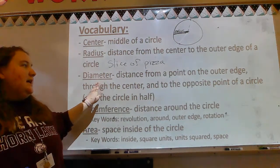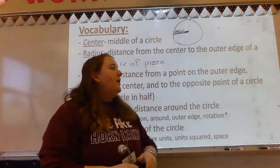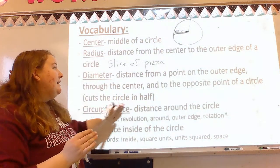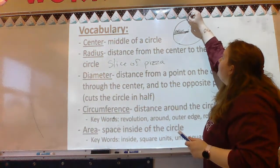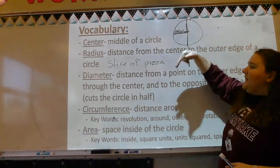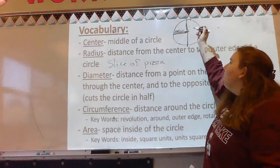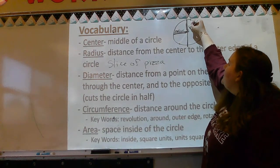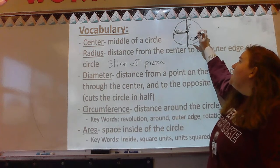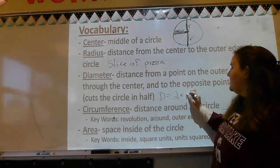Next, we have our diameter. Diameter is the distance from a point on the outer edge through the center and to the opposite point of a circle — it cuts the circle in half. If radius is my pizza slice, then diameter cuts my pizza in half. Diameter is special because it contains two radiuses. Diameter can be equal to two times your radius.